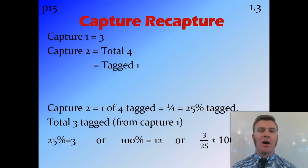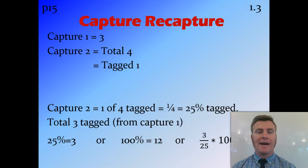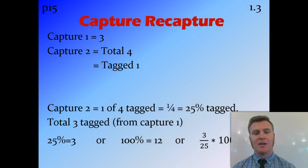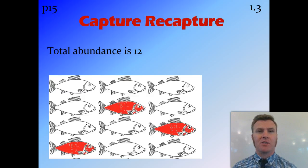One was tagged out of the four that I caught in my second capture, so therefore I've tagged a quarter, or 25% of the population, assuming that the sample in my second capture is representative of the total population. I know that in my original capture I got three, and three are tagged. So I assume that 25% of the population is the three that I tagged earlier, meaning 100% of the population is going to be 12. I work that out by taking three, dividing it by 25, and multiplying by 100, which gives me 12. So therefore our total abundance is 12 — and as I said at the beginning, there were 12 fish that we were trying to estimate the abundance of.